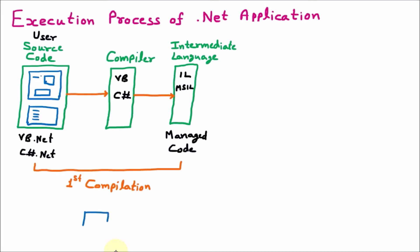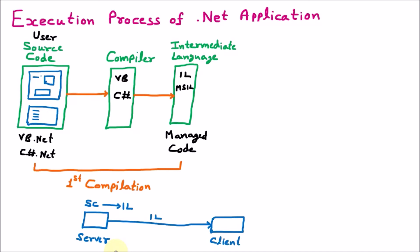Now we understand this process with the help of a client-server model. Let's say this is the machine where the user works — this is the server. At the server, the user creates source code, which is first converted to the intermediate language. From the server side, we send this intermediate language to the client. This intermediate language is very secure — nobody can hack it in between and nobody can understand it, even if someone intercepts the IL.